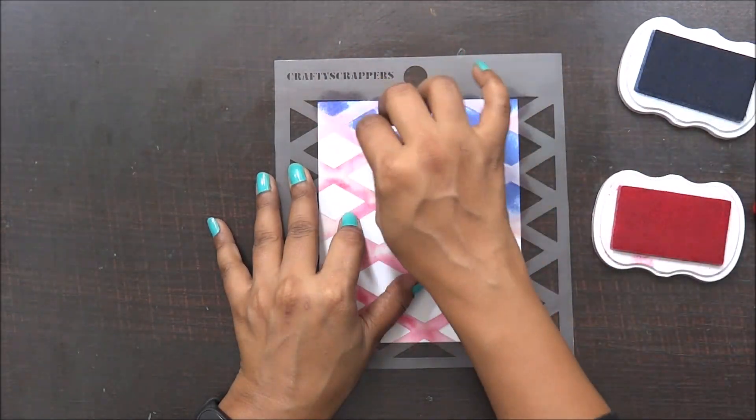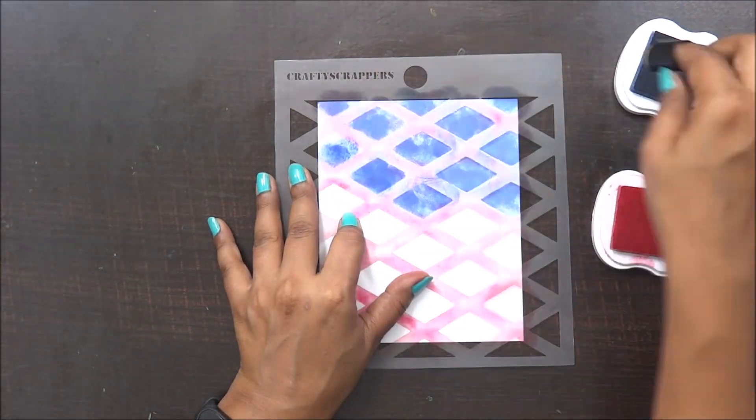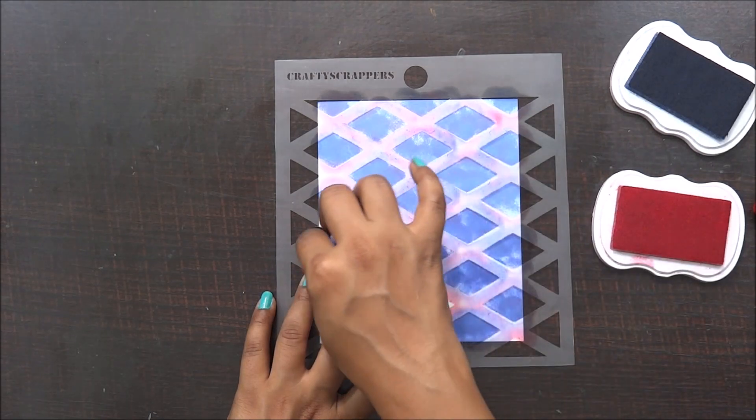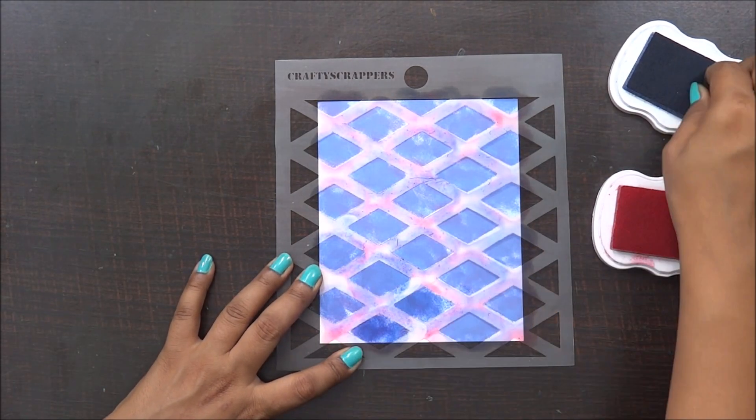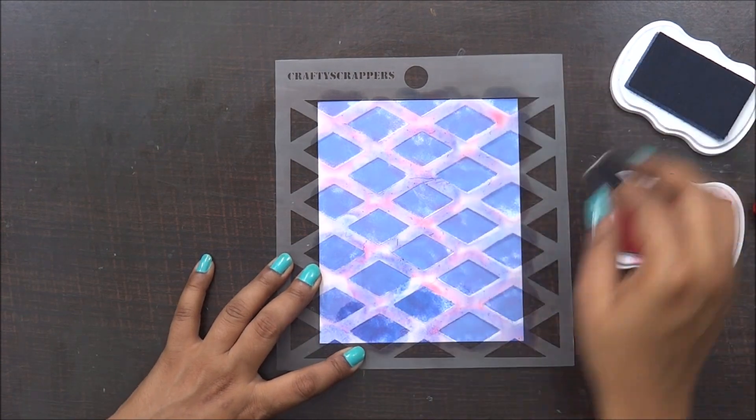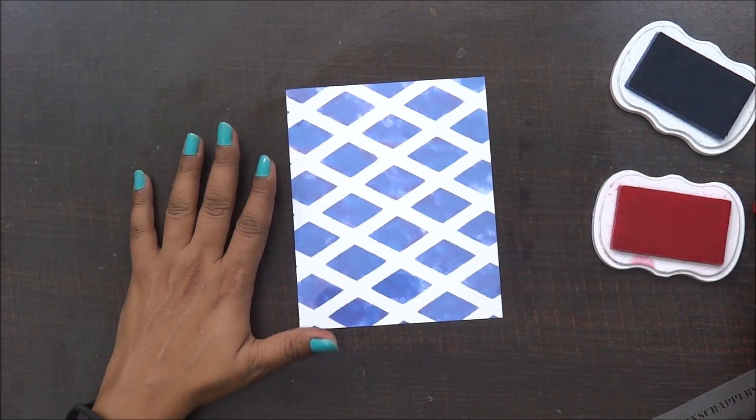While working with the stencil, I realized that I actually should have cleaned my stencil with every use of color, which I didn't do this time. I can see some spots of pink on my blue shade, but I think that's absolutely fine because my next shade is pink. But if you are working with different colors, make sure you clean your stencils with every use.